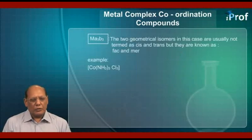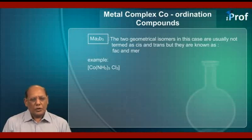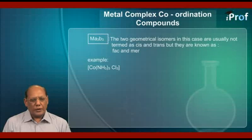An overall example representing this formula is [Co(NH3)3Cl3], which is a non-ionic complex. The two geometrical isomers in this case are usually not termed as cis and trans, but they are known as fac (F-A-C) and mer (M-E-R).